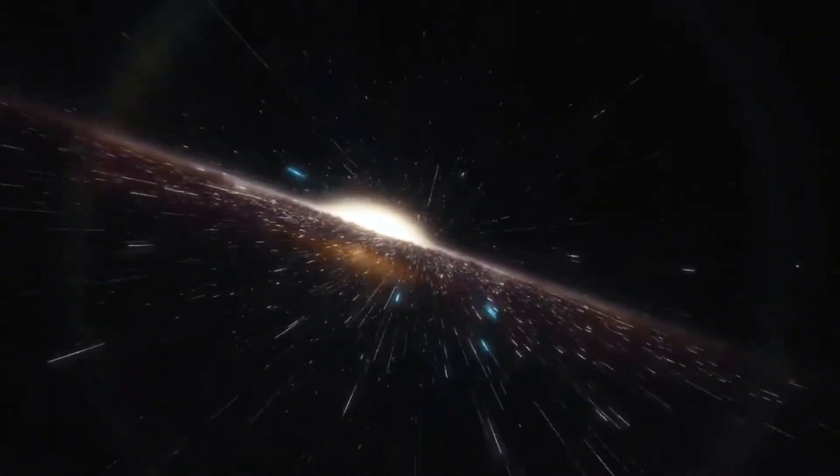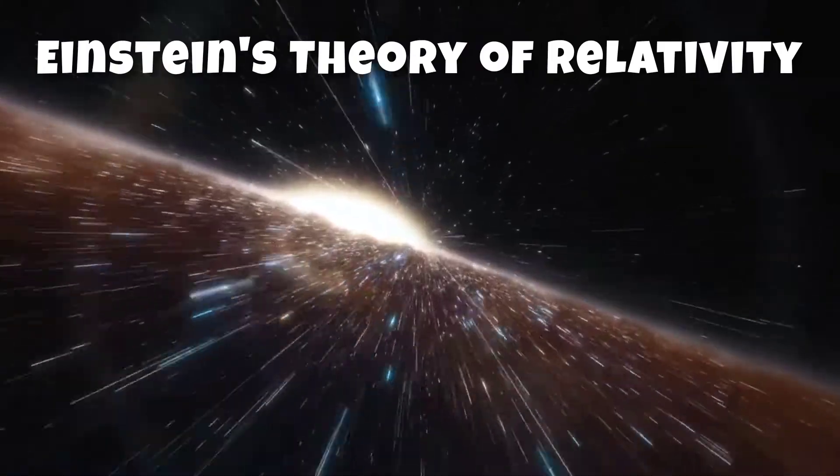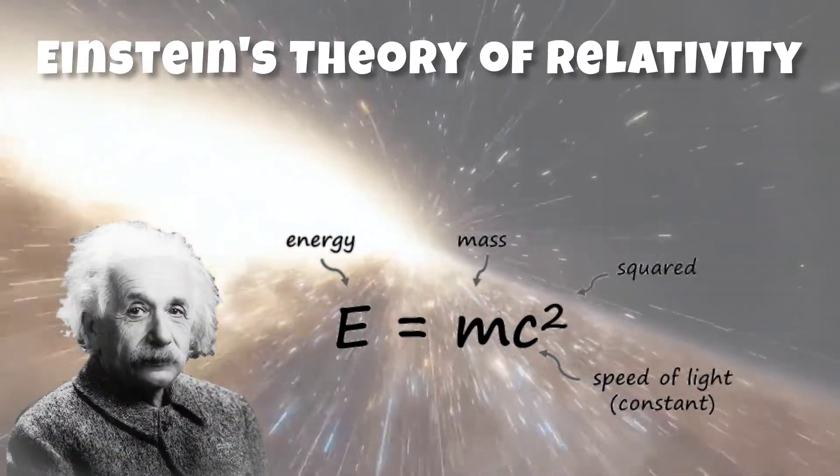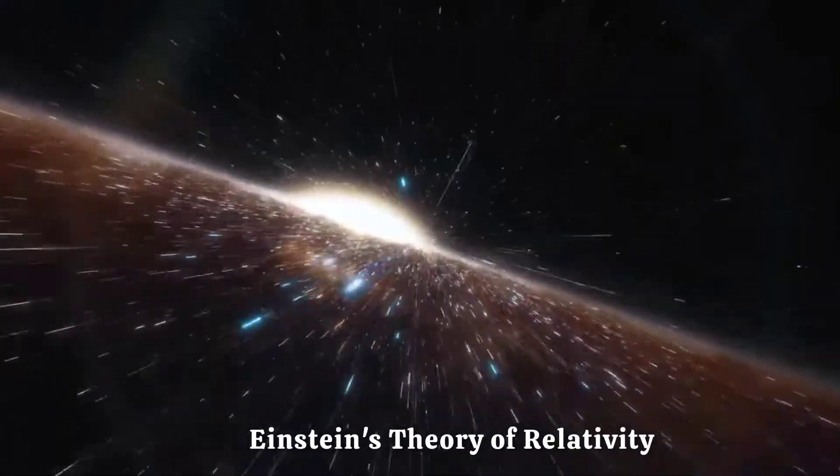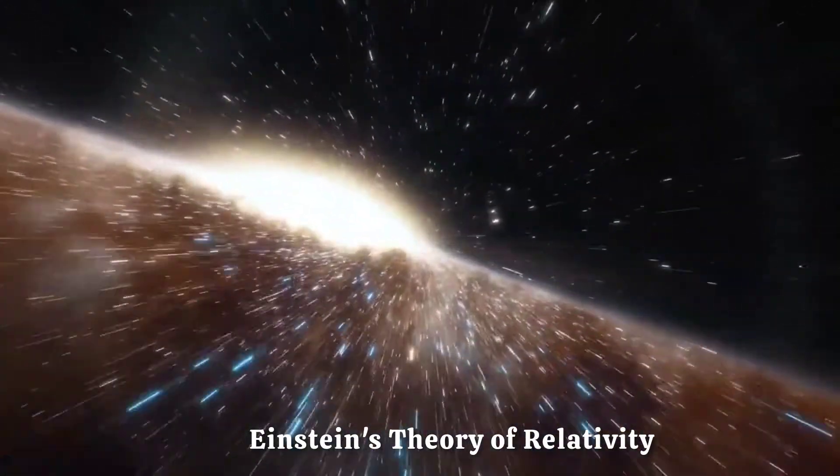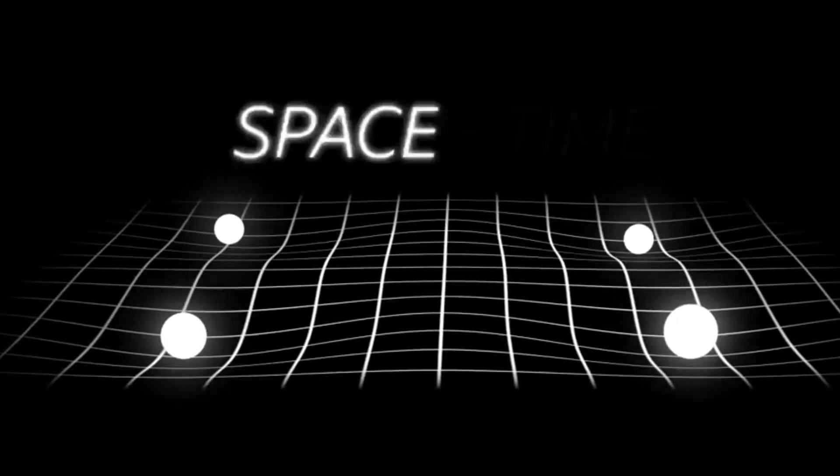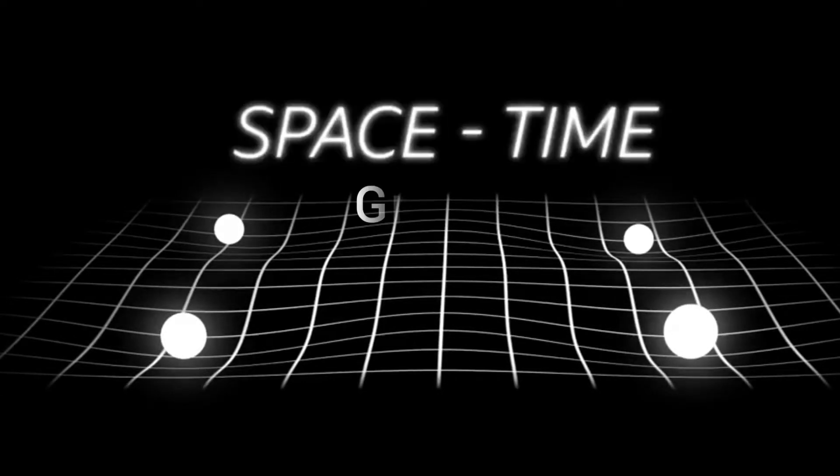Number 2: Albert Einstein and the Equation E equals mc squared. Einstein's Theory of Relativity is undoubtedly one of the most famous scientific theories of all time. Proposed by Albert Einstein in the early 20th century, this theory revolutionized our understanding of space, time, and gravity.